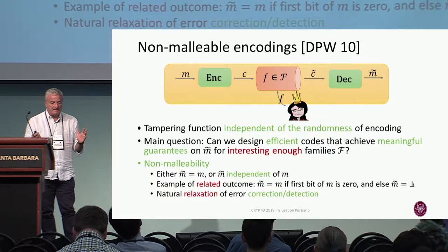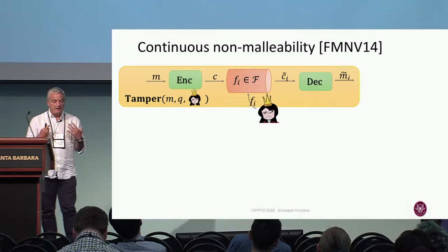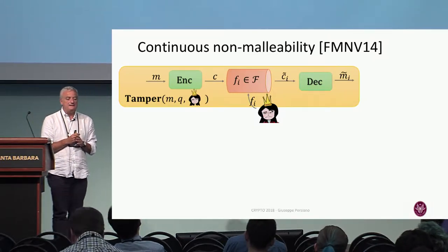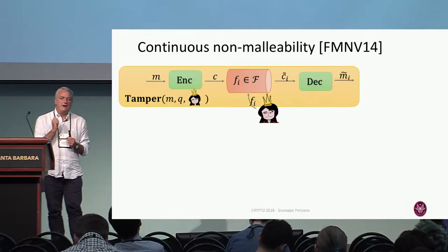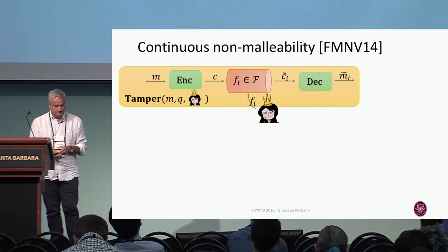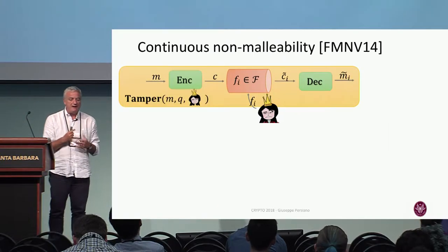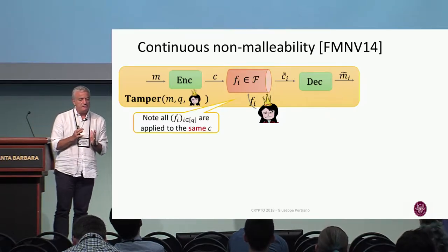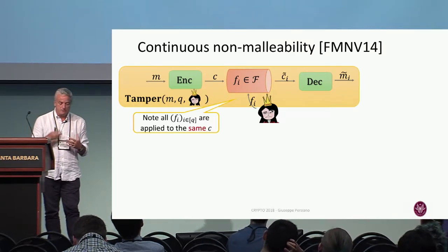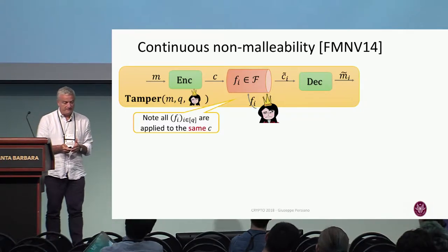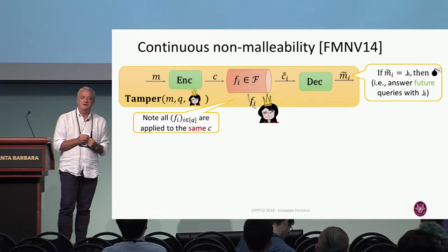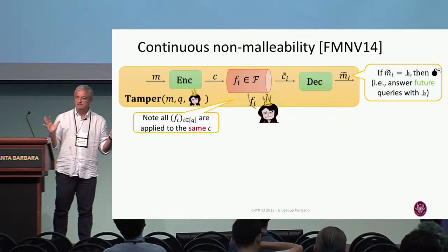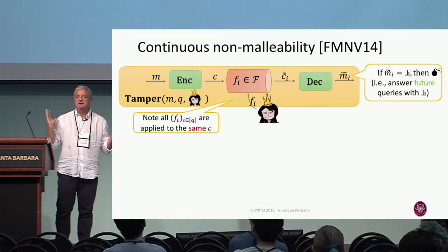This is the classical notion. We look at the continuous non-malleability case, introduced by Faust et al. a few years back. The difference is that the adversary is not allowed to try just one tampering function, but can try polynomially many: F_i for i from one to poly. The same codeword has each F_i applied to it. There is also a necessary restriction: the first time the adversary produces an invalid codeword, the experiment stops — from that moment on, the adversary gets no feedback; it just receives 'invalid.'